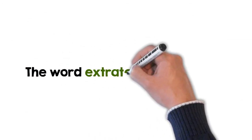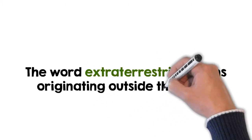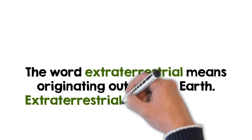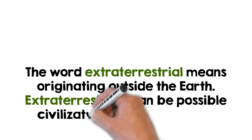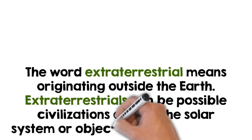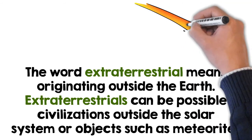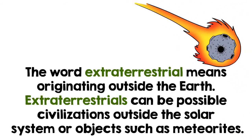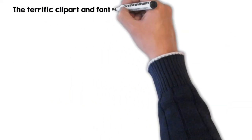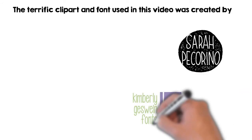The word extraterrestrial means originating outside the earth. Extraterrestrials can be possible civilizations outside the solar system, or objects such as meteorites.